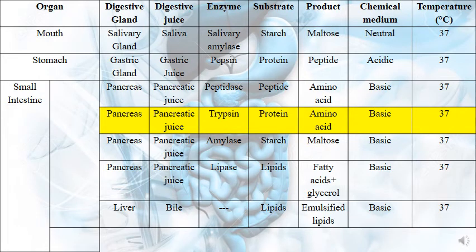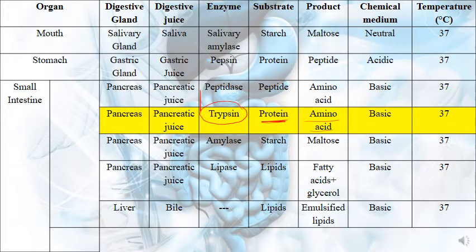The pancreas also secretes pancreatic juice containing another enzyme called trypsin. Trypsin works on protein to give amino acid — moving directly from the complex form to the simplest form of protein. The medium is basic and the temperature is 37 degrees Celsius.